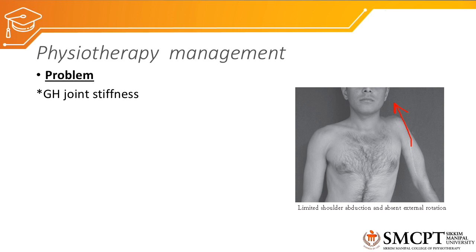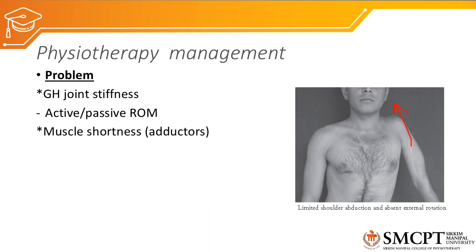The glenohumeral joint will become stiff due to reduced range of motion and tightness of the capsule and muscles over the long term. For stiffness, active and passive range of motion exercises along with mobilization and stretching of the capsules and muscles are provided. Muscle shortness of the adductors is also seen because reduced abduction keeps the adductor muscles in a shortened position, so adductor stretching is also part of management.